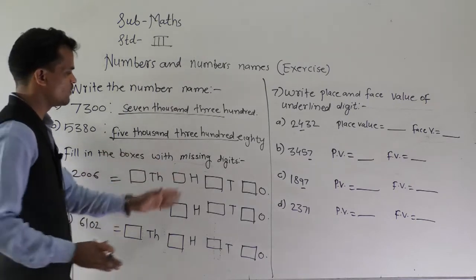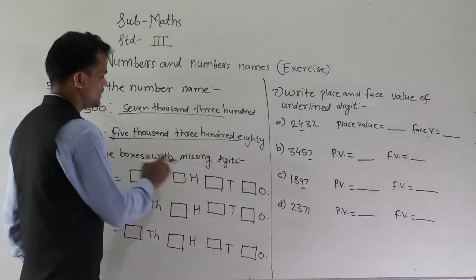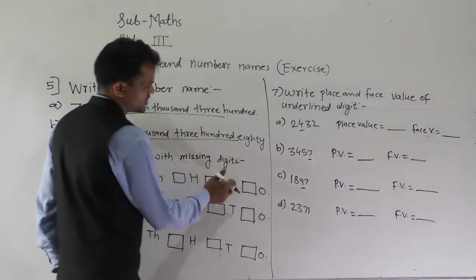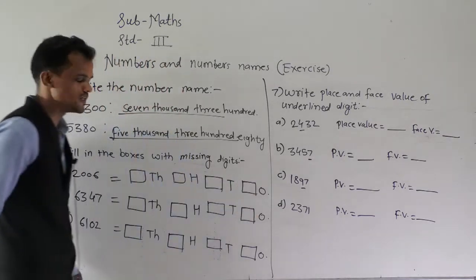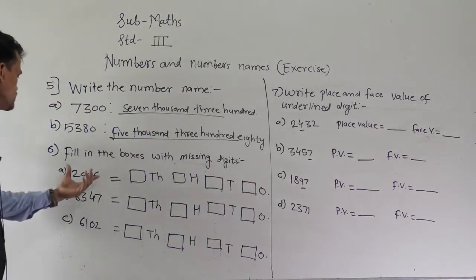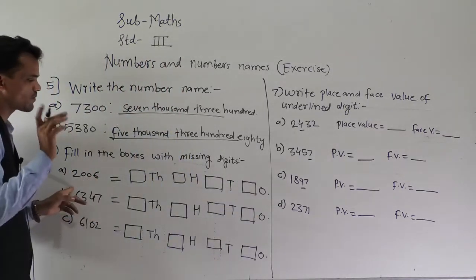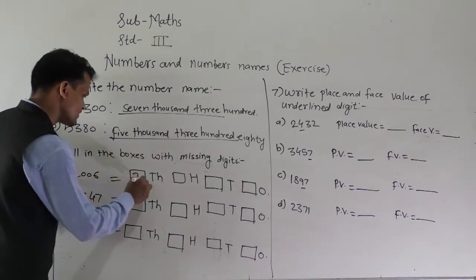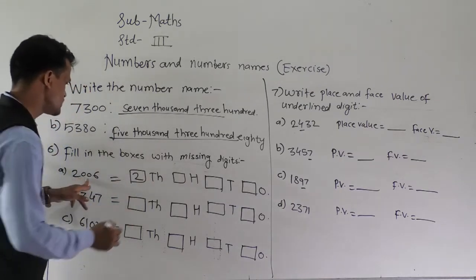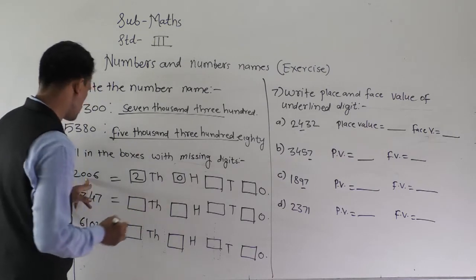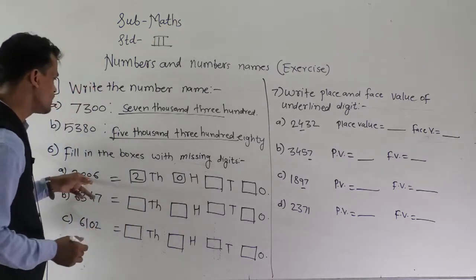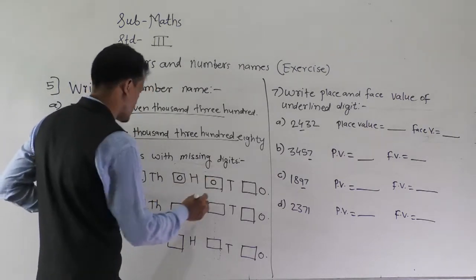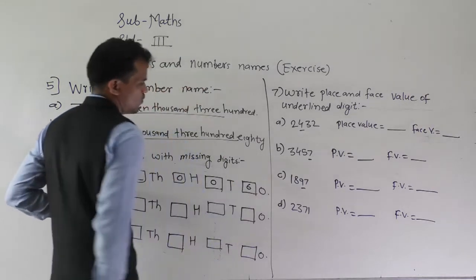Next: fill in the boxes with the missing digit. A number is given and we have to write the thousand place digit, hundred place digit, ten place digit, and one place digit. This is the four-digit number 2006. Starting from the thousand place: 2 is at thousand place, 0 is at hundred place, 0 is at ten place, and 6 is at one place.